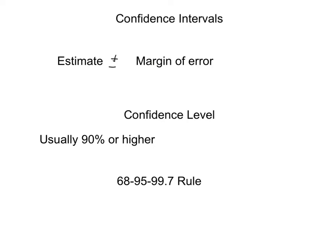We have things called confidence levels, and they're usually 90% or higher. I would say that usual is about 90% or 95%. And what ties in with this is the 68-95-99.7 rule.